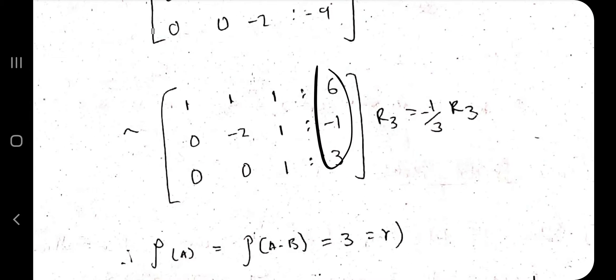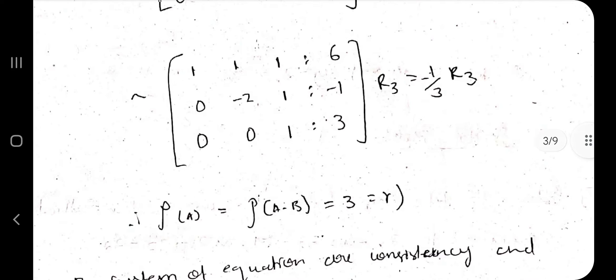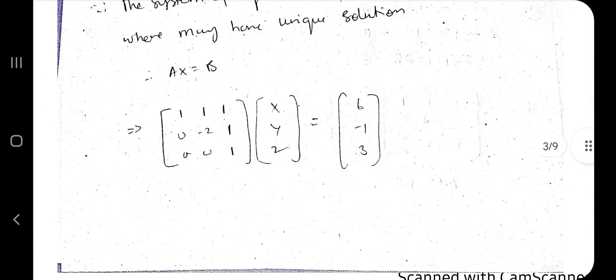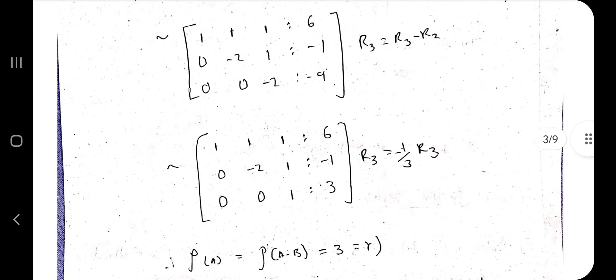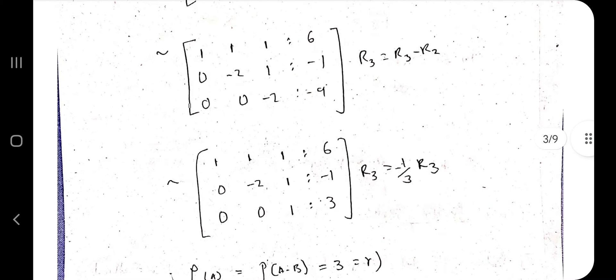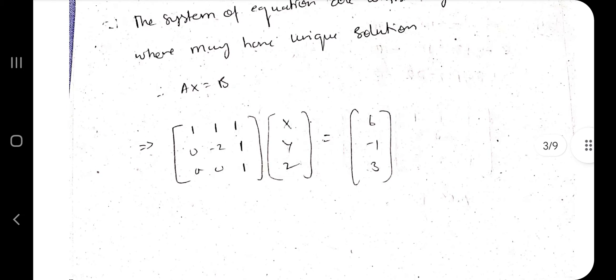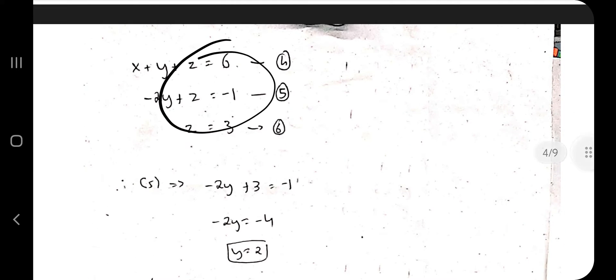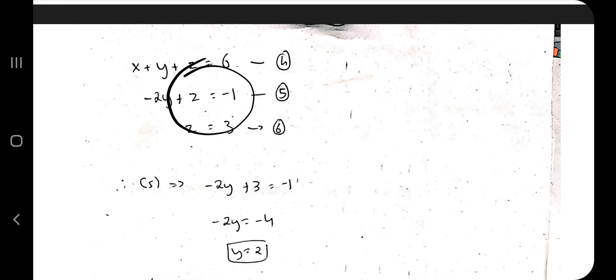Apply row operations to the entire augmented rows including the b column. After obtaining echelon form, check that the rank equals the number of variables — confirm there are 3 non-zero rows, so rank = 3. Write the resulting system back as equations. Do back-substitution: multiply out to find x, y, and z. The three resulting equations can be solved easily to get the final values of x, y, and z.